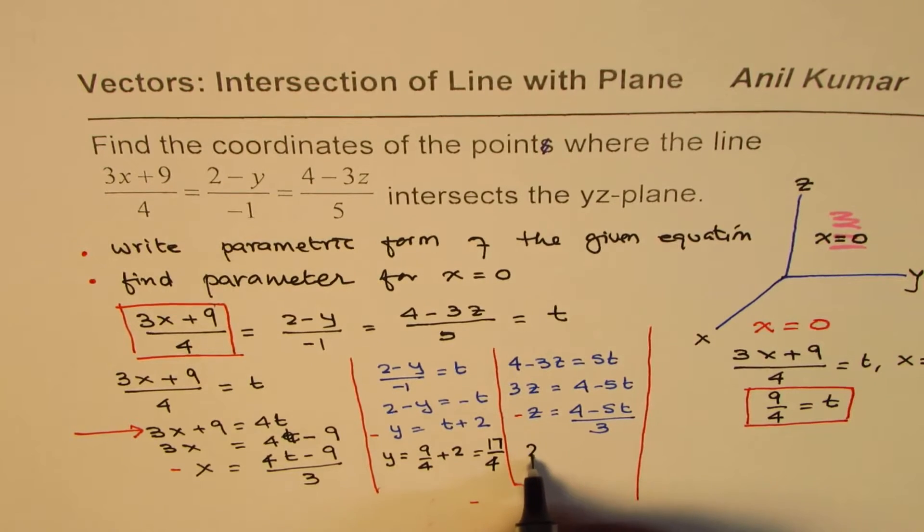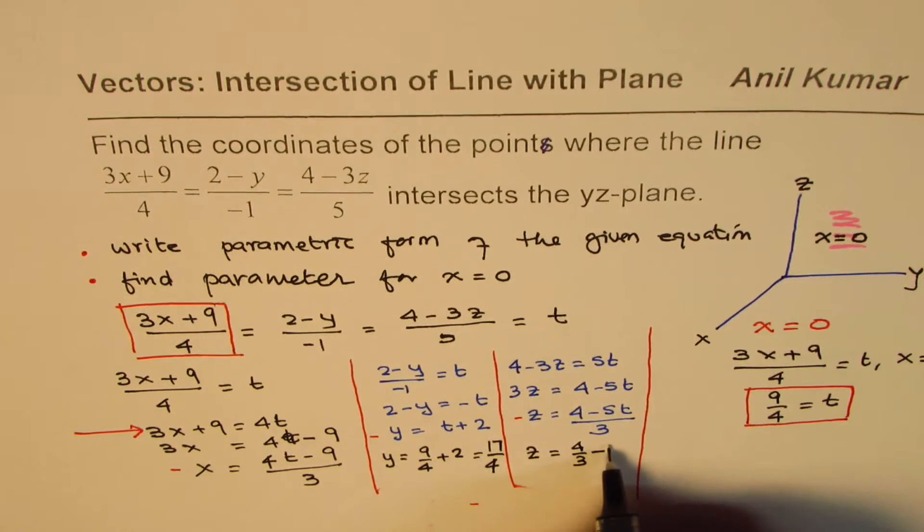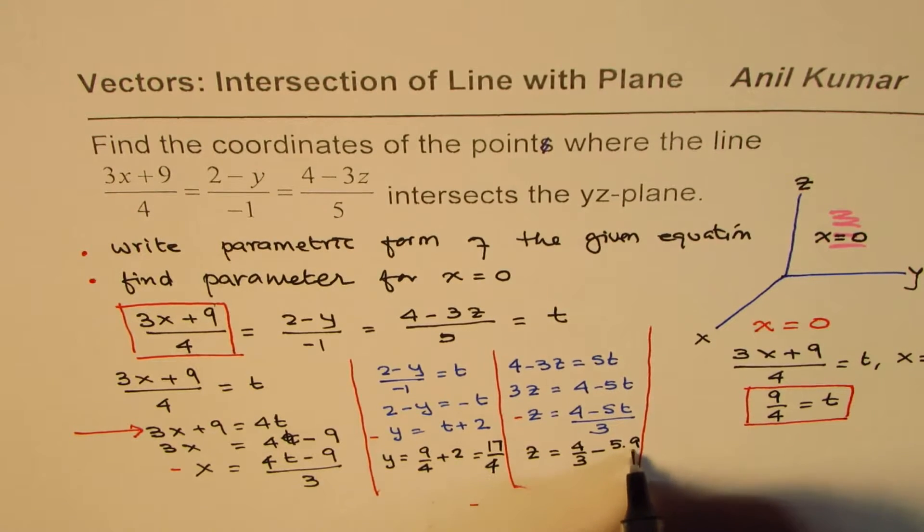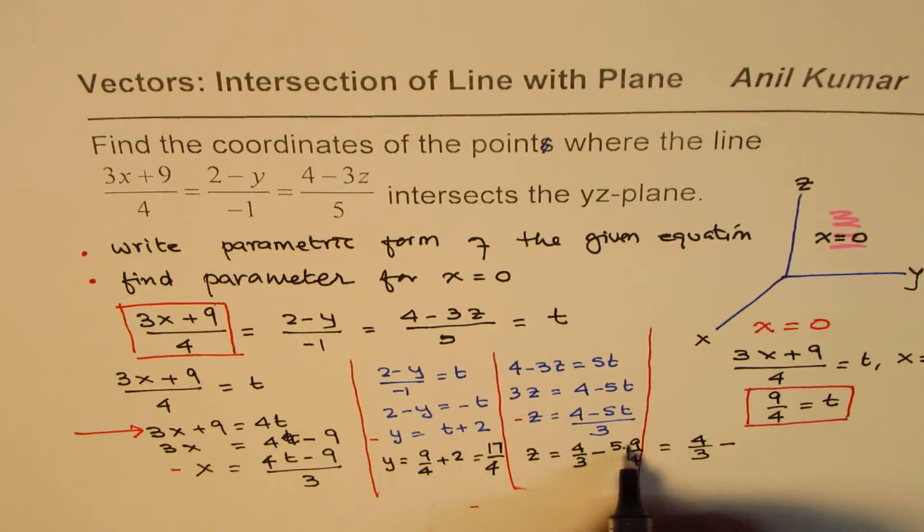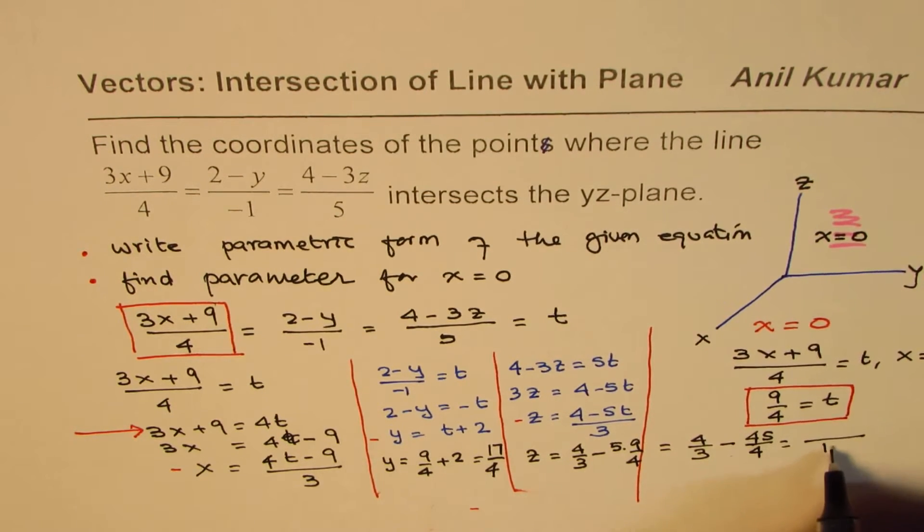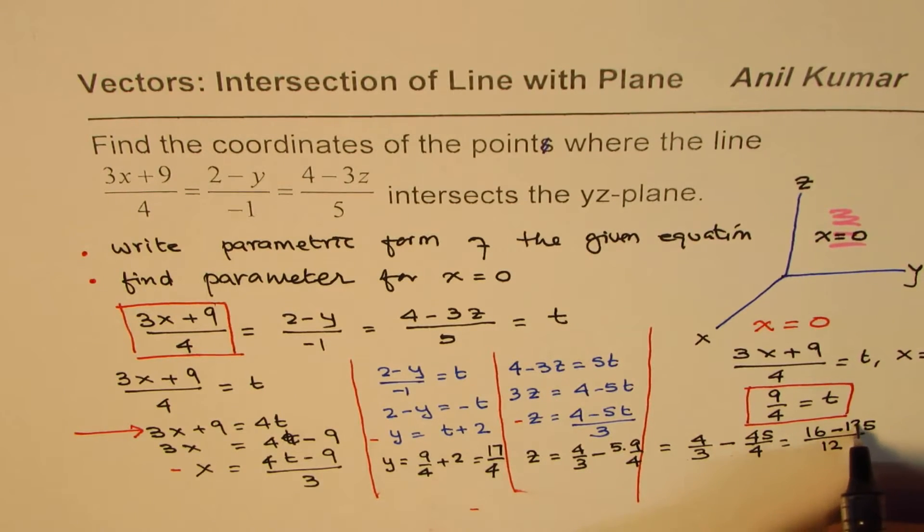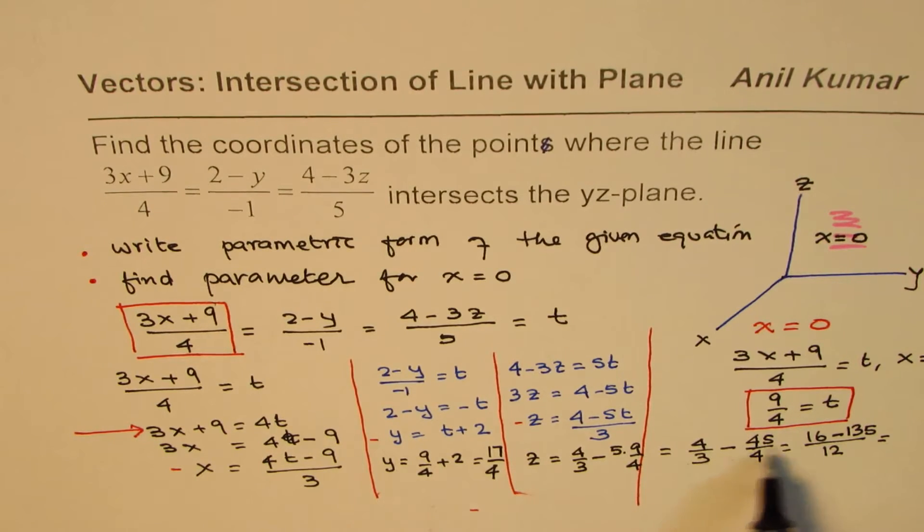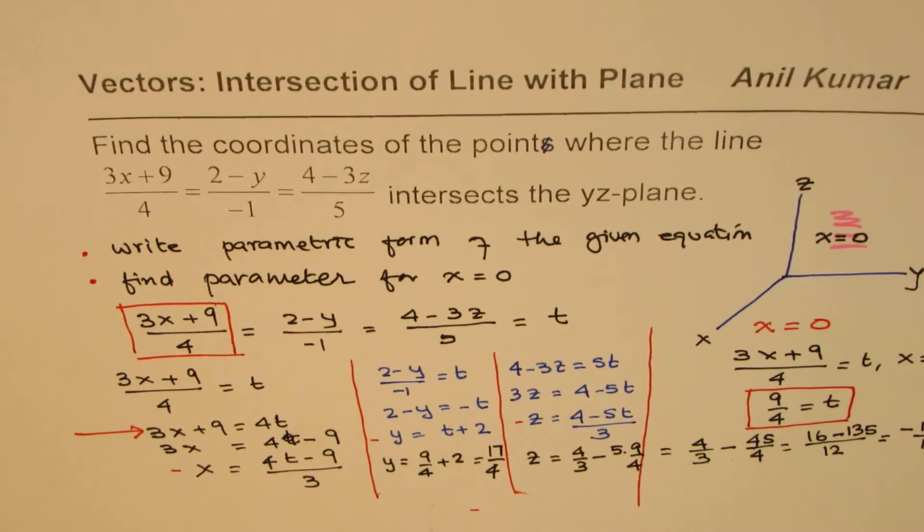As far as z is concerned, let's write this as 4/3 - 5 times 9/4. This is kind of tricky. 4/3 - 9 times 5 is 45/4. With common denominator of 12, we have 16 - 3 times 45, so it is 135. Now we'll take away 16 - 135. This number is bigger, so 15 take away 6 is 9 and 2 take away 1 is 1, so you get -119/12.